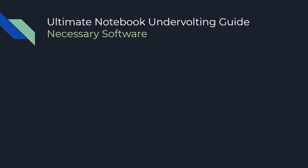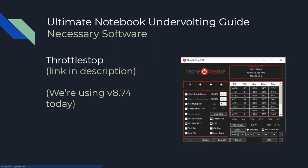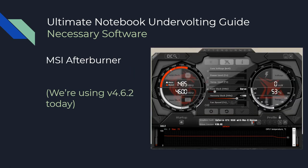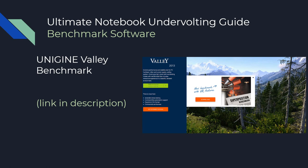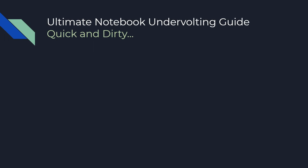Let's talk about the necessary software. For CPU undervolting, you'll need a program called ThrottleStop — we'll be using version 8.74. For the GPU, we'll need MSI Afterburner version 4.6.2. We'll also be using the Unigine Valley benchmark throughout this guide.